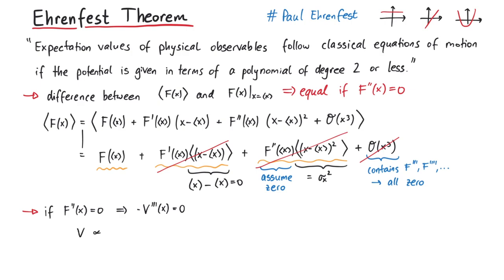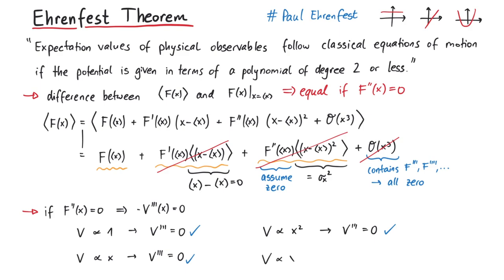If the potential is constant, so proportional to one, the third derivative is obviously zero — therefore such a potential fulfills the requirements. If we assume a linear or quadratic potential, the third derivative is still zero, and therefore those kinds of potentials also lead to expectation values having classical equations of motion. However, if we assume a potential proportional to x cubed, the third derivative is six, and therefore such a potential is not suitable.